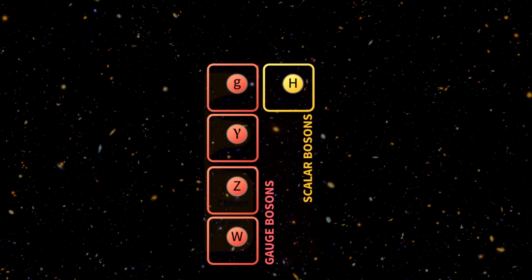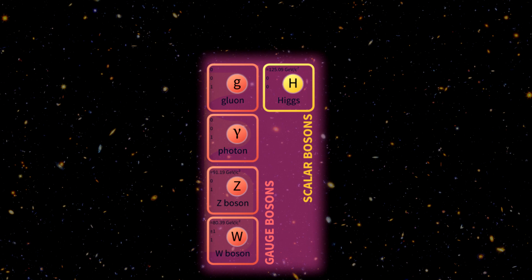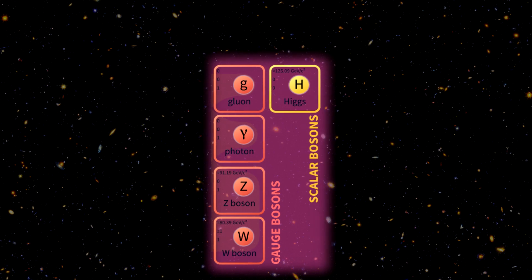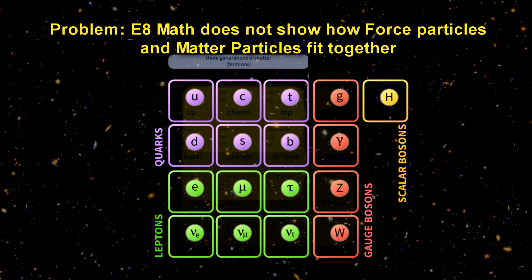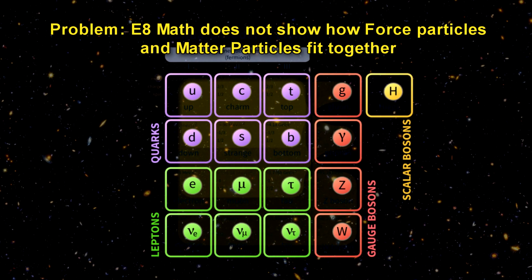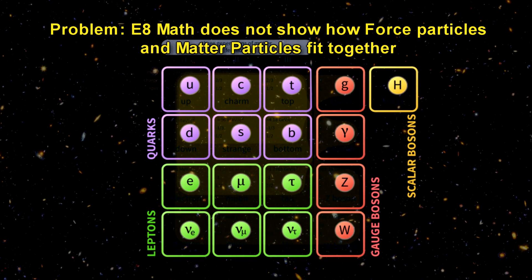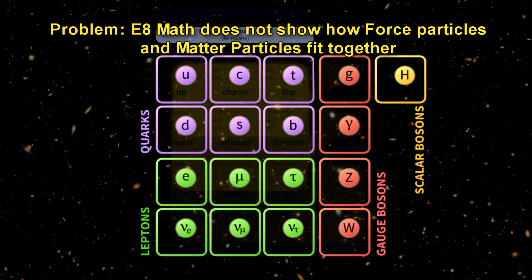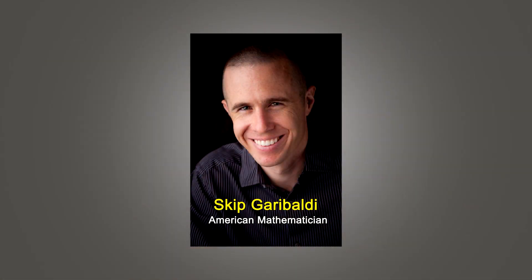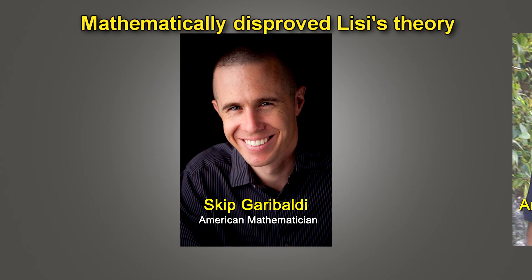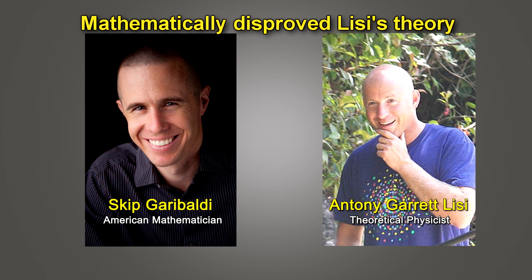Lisi's theory does have some problems. One of the biggest is that Lisi combines force carrier particles — bosons — with the matter particles. Now string theory does this too, but with a lot of rigorous mathematics to back it up. That kind of math is not present in E8, so Lisi is kind of combining these arbitrarily, and that is not acceptable to most physicists. In addition, a leading mathematician and expert on Lie groups, Skip Garibaldi, wrote a paper in 2010 which mathematically disproved Lisi — but Lisi came back with counterarguments to that.